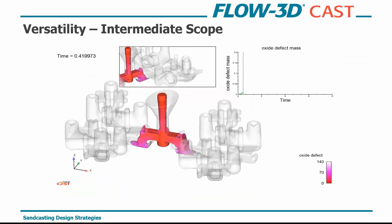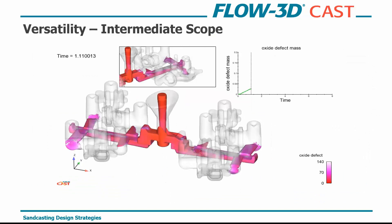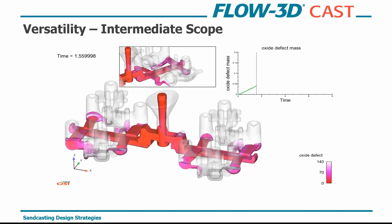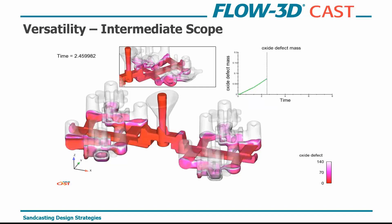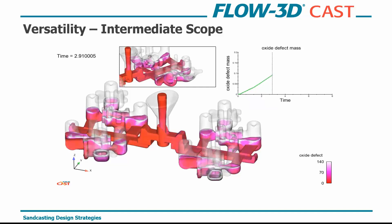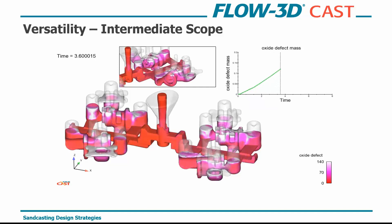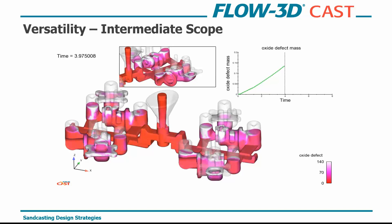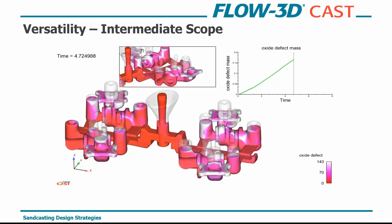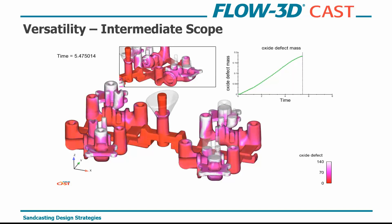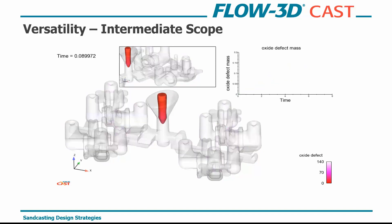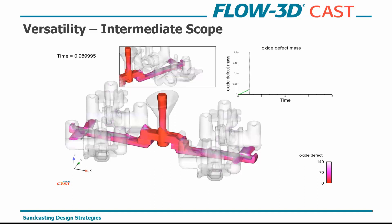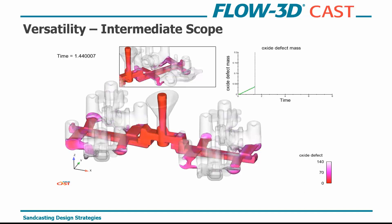Here's something a little more intermediate. The output here is oxide formation, giving a visual cue of the overall fill of the part. Are you getting colliding metal fronts? Is there overall turbulence in your mold? How well are your risers filling? Are they filling last? Is the oxide getting pulled into the riser or left in the mold itself? This is where most of your simulations are going to take place.